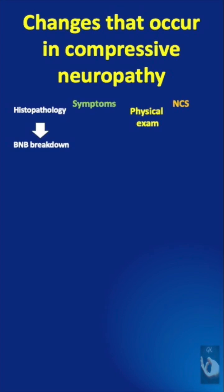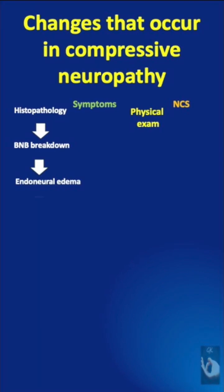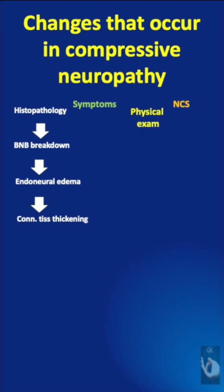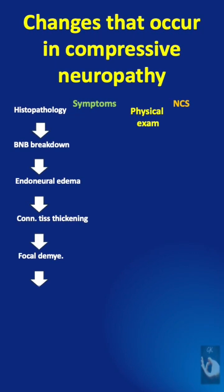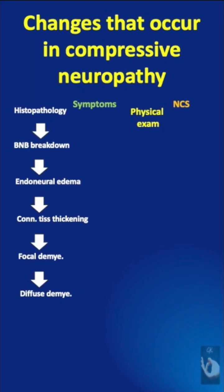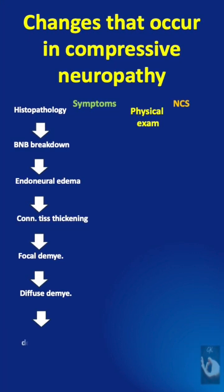Histopathology-wise, the first change that occurs is the breakdown of the blood-nerve barrier. There is endoneural edema followed by connective tissue thickening. This leads to focal demyelination, leading on to diffuse demyelination, and finally axonal degeneration.